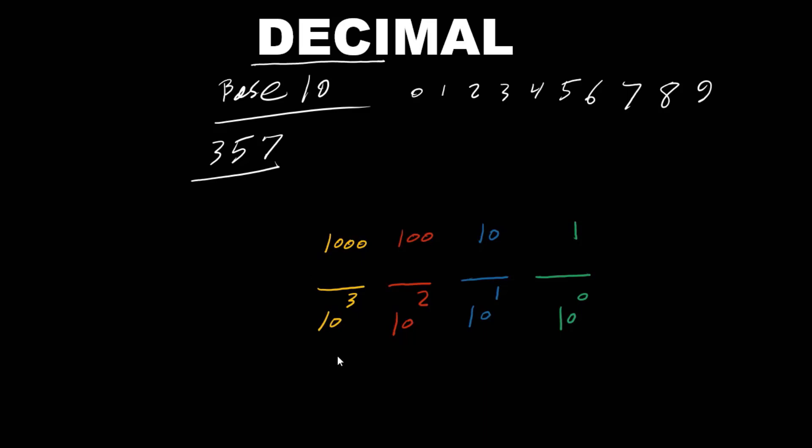Therefore, when we talk about 357, it basically means 3 times 100 plus 5 times 10